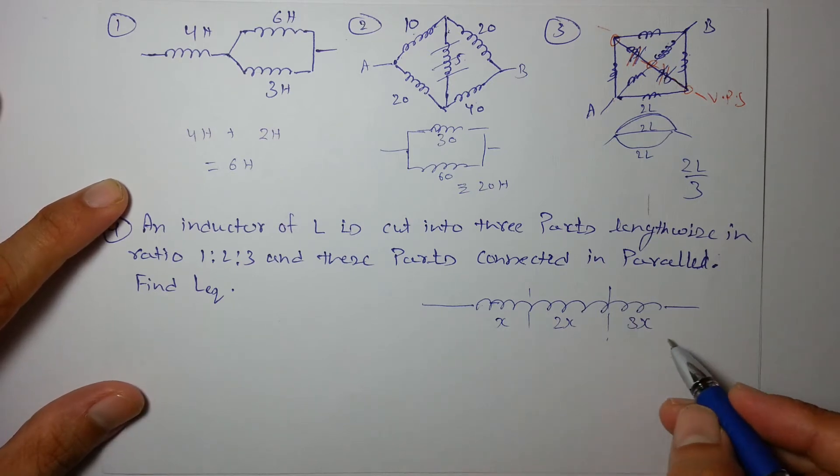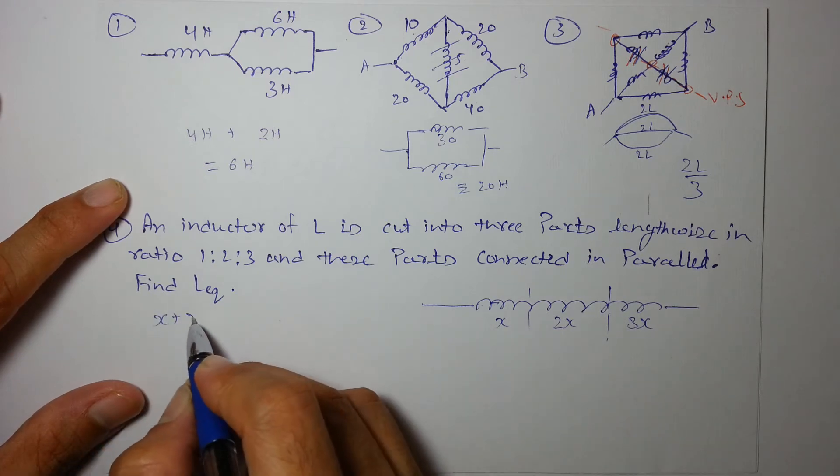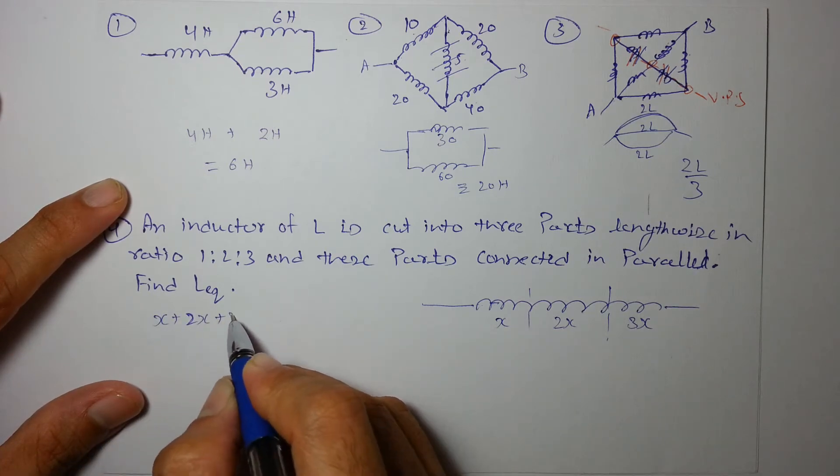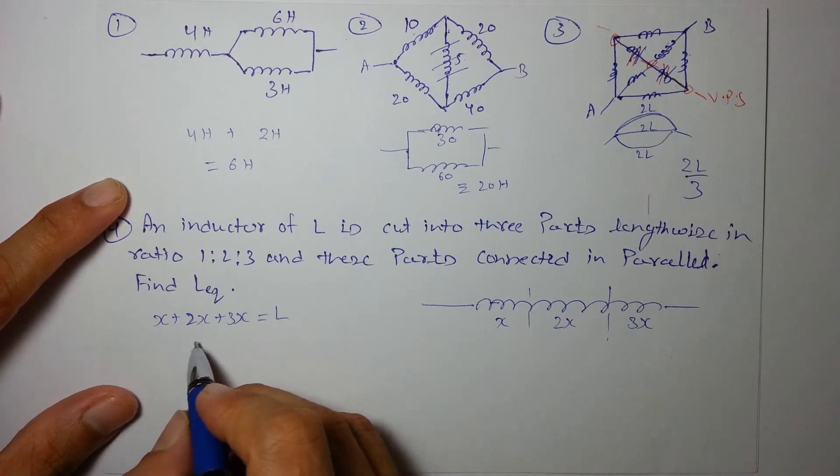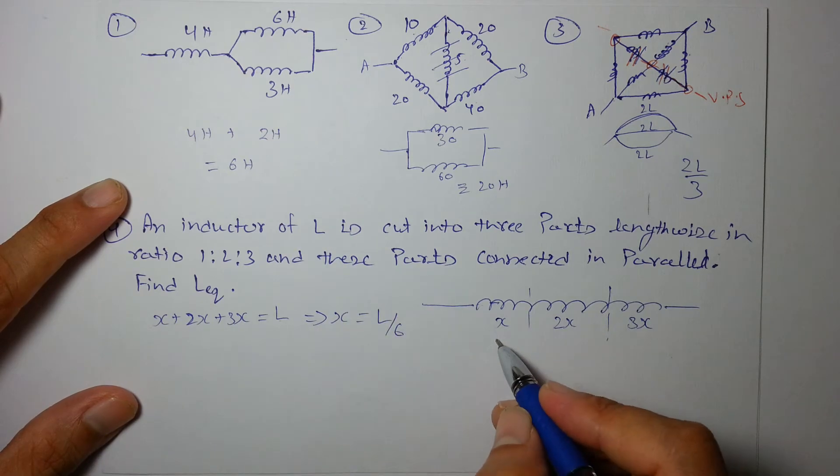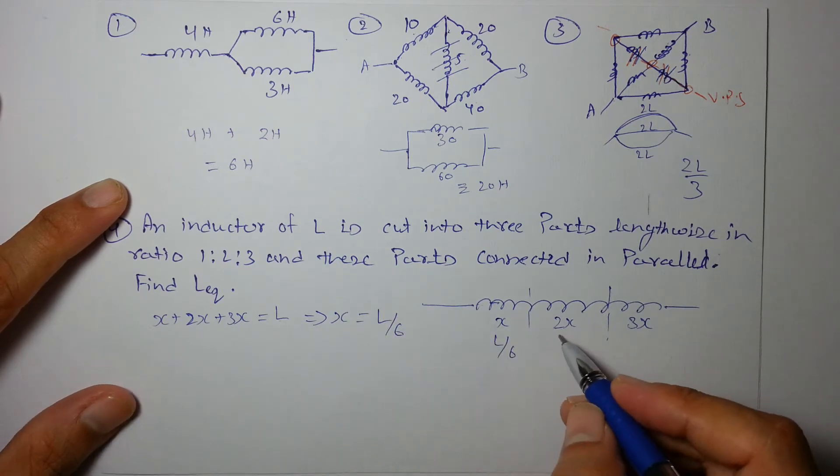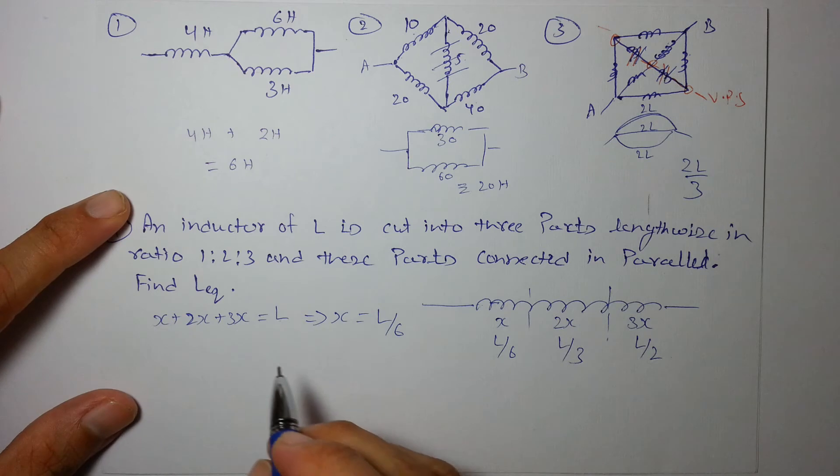So this length is x, this is 2x, and this is 3x, or the inductances are these values also. So x + 2x + 3x is nothing but the total inductance which is L, so we can say x is L/6. This inductor is L/6, this will be L/3, and this will be 3 times L/6 which is L/2.